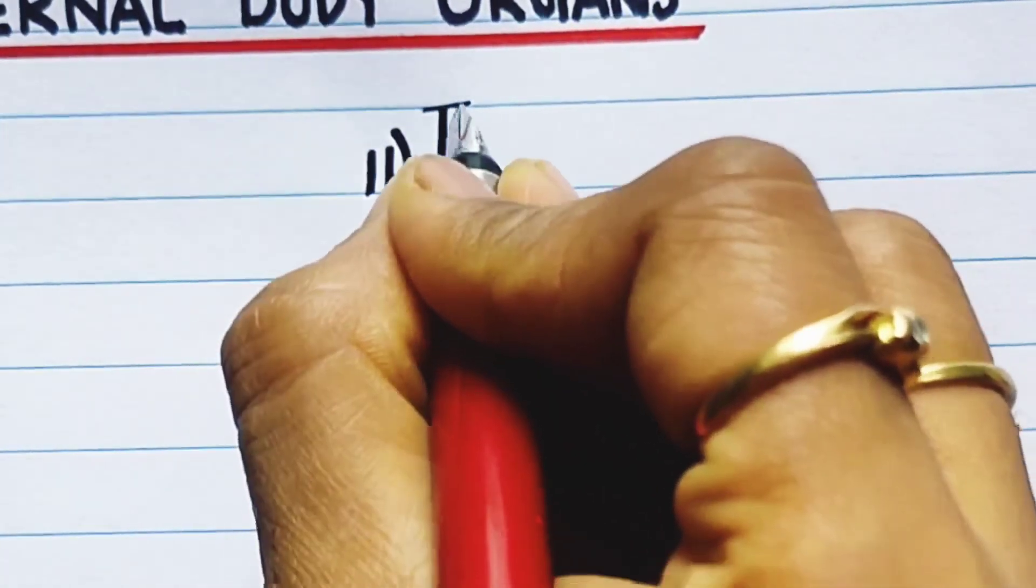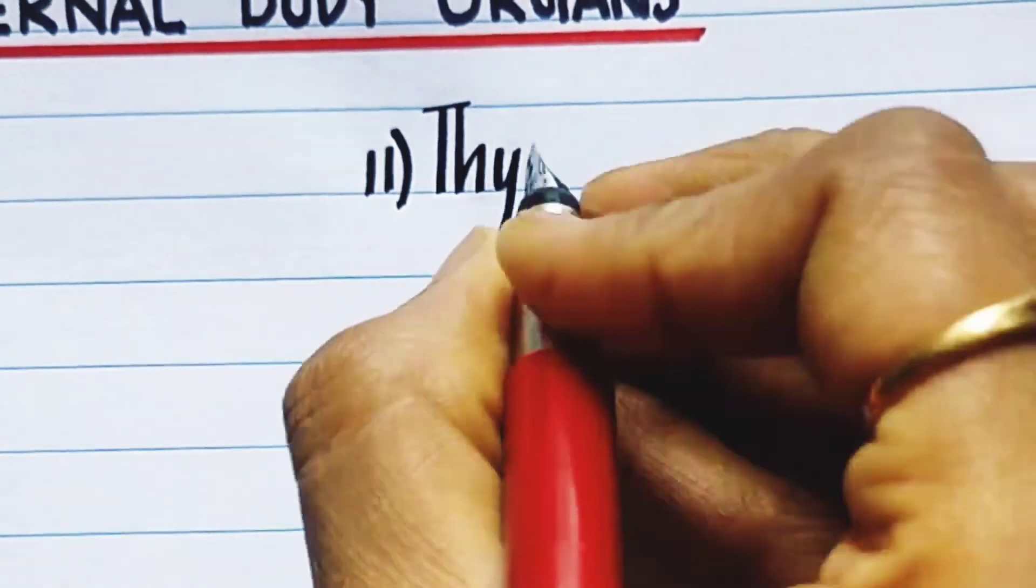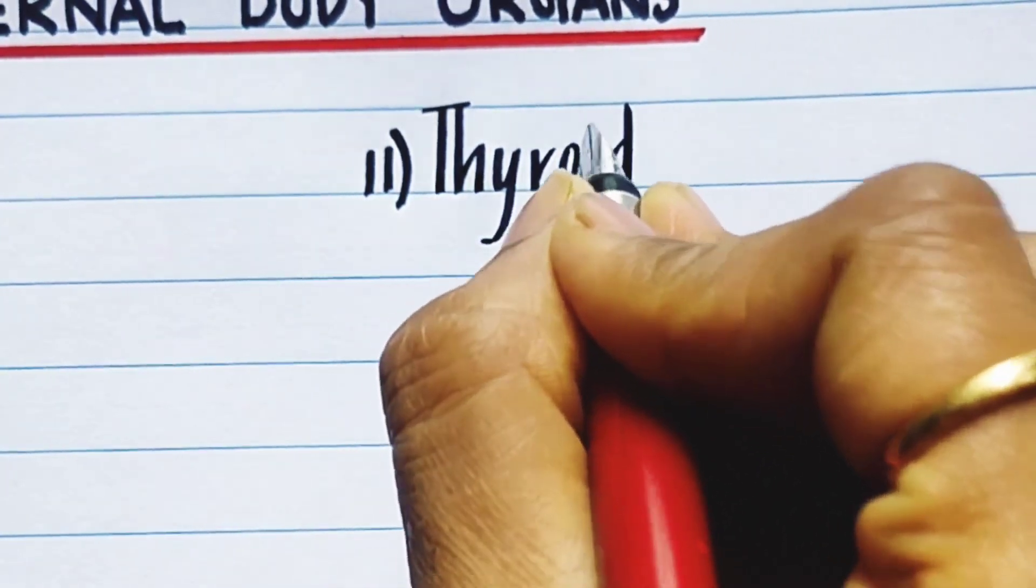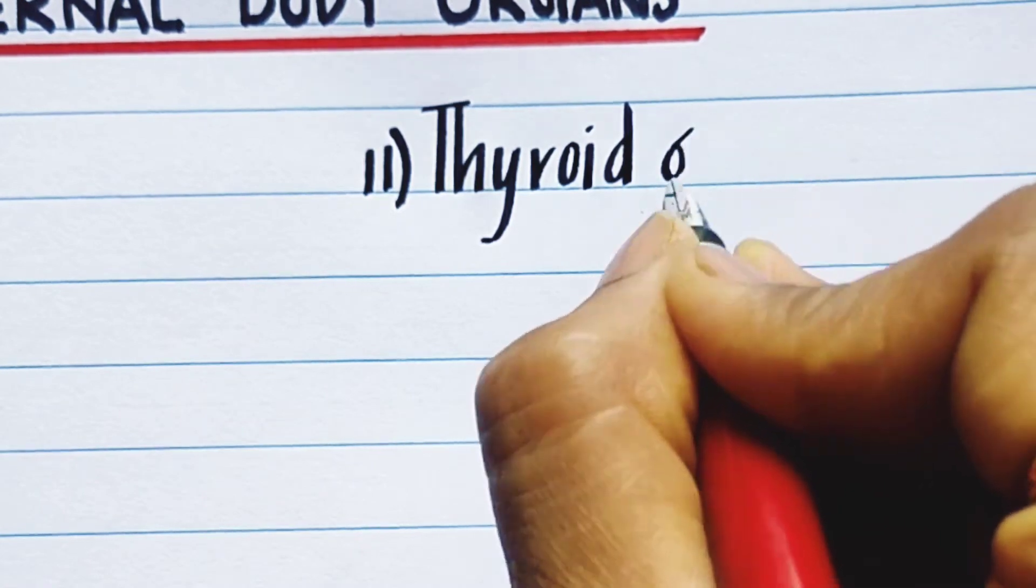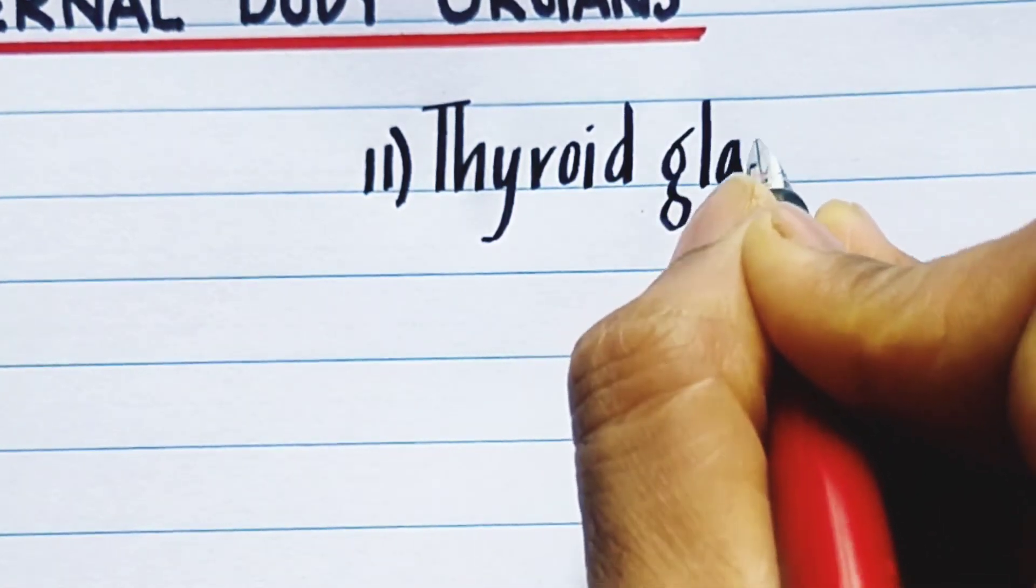Eleventh one is thyroid gland, T-H-Y-R-O-I-D, thyroid gland, G-L-A-N-D, thyroid gland.